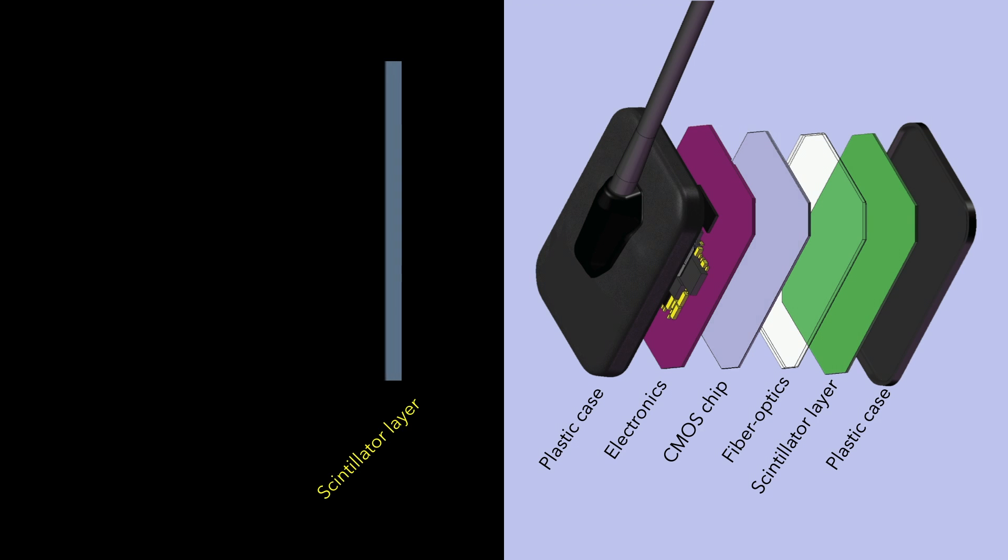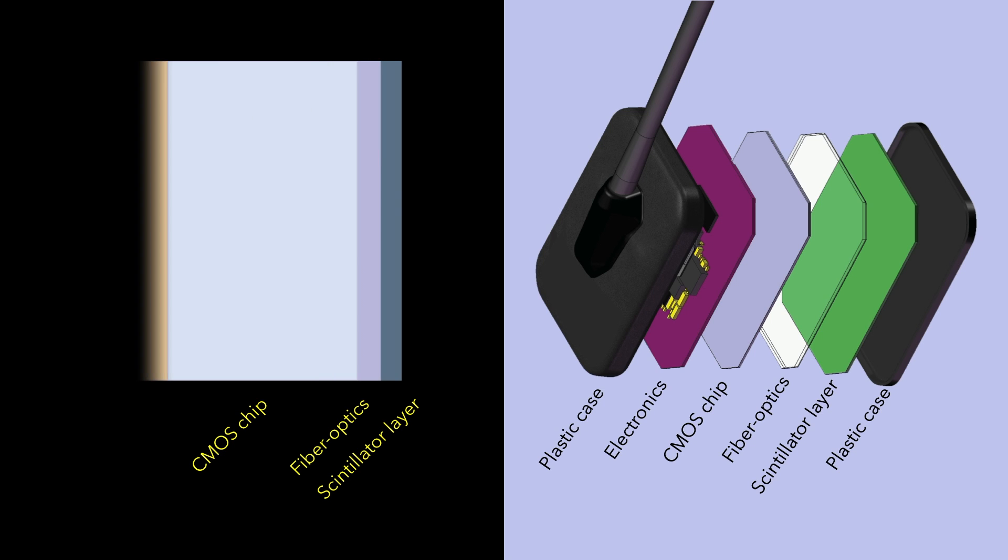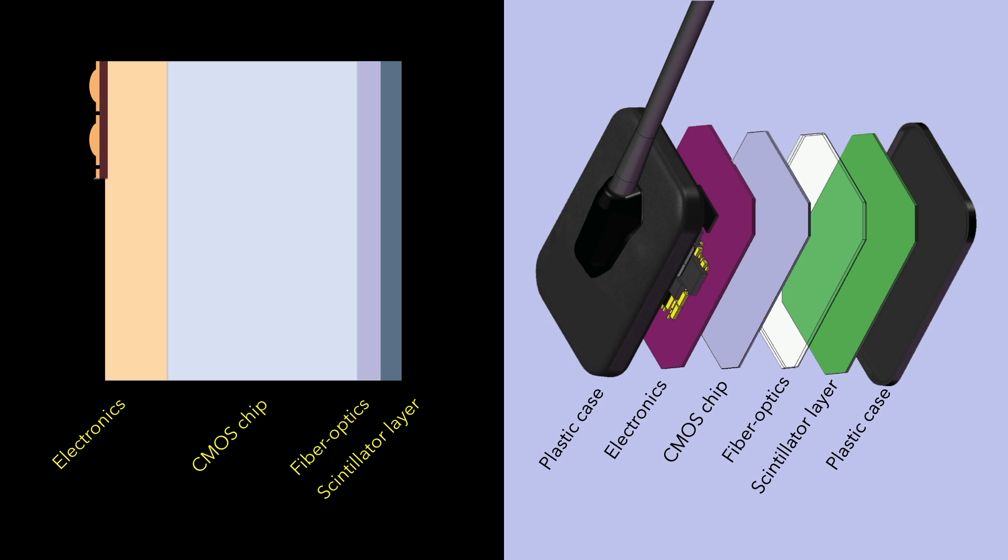Packed within this plastic casing is a scintillation layer, fiber optics, CMOS imaging chip, which really is the heart of this technology, and electronics that record the changes that happen in the chip and provide the data that go towards making the radiographic image.